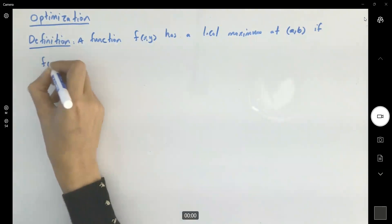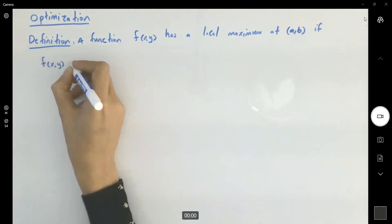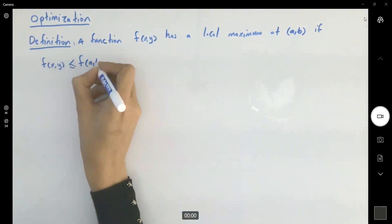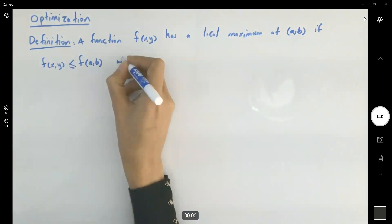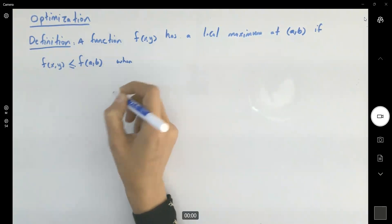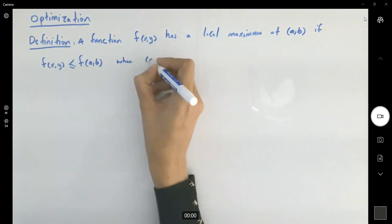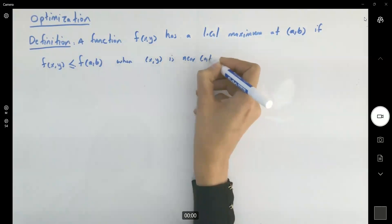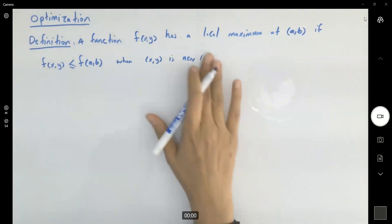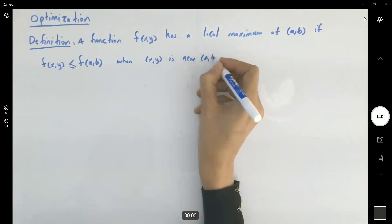the z value for the function at any nearby point is less than or equal to the z value of the function at that given point. So again, remember that it is a local analysis when x and y is near a and b, the point a and b.